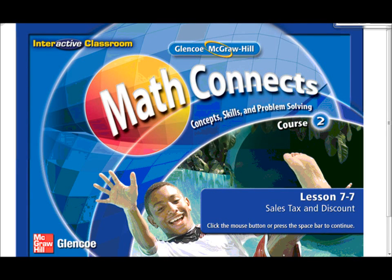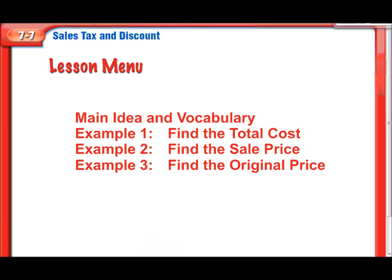Hey, guys. Mr. Ziegner here. We're looking at Lesson 7-7, Sales Tax and Discount. In this lesson, we'll be finding the total cost with tax, finding the sales price after a discount, and then, if we know the sales price and the percent we saved, we have to backtrack and find the original price. That's going to be a little tougher. Make sure you're watching carefully on Example 3.